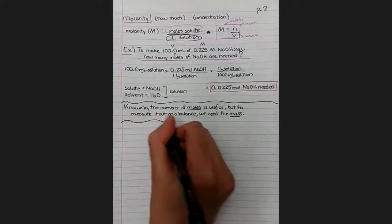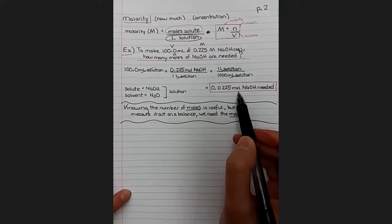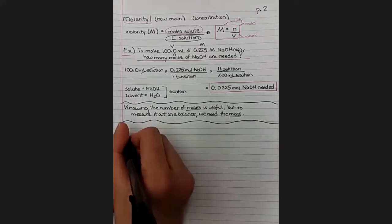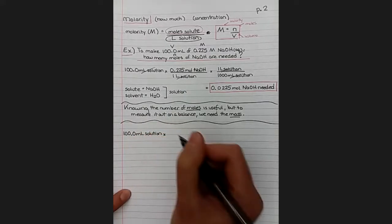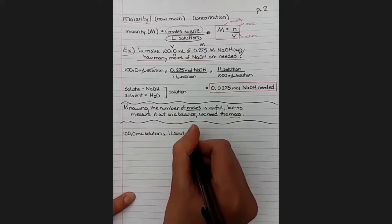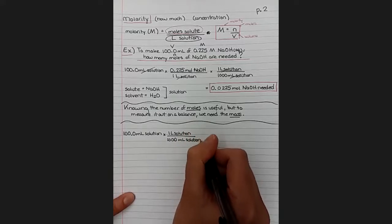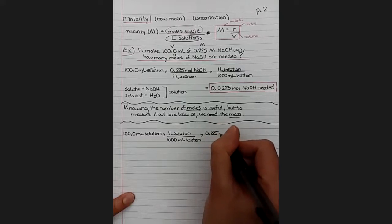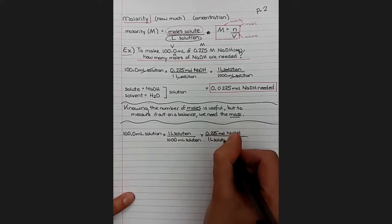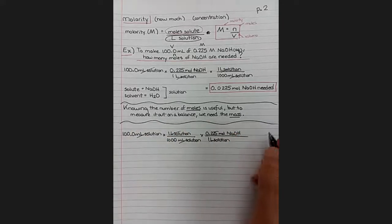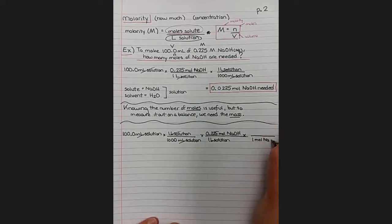Knowing the number of moles of something is definitely useful. We will need to know that as we're trying to balance equations. But in order to measure something out on a balance, we need to know the mass. So let's do that problem again as a bonus problem, and let's solve for the mass this time so that we can actually make the solution in the laboratory. So we finished with moles and we know how to convert from moles to grams already using the molar mass. We'll take our 100 mils of solution, convert that into liters of solution, multiply by our molarity 0.225 moles of sodium hydroxide for one liter of solution. And now to get from moles of sodium hydroxide to grams of sodium hydroxide, we need molar mass, the number of grams in one mole of sodium hydroxide.